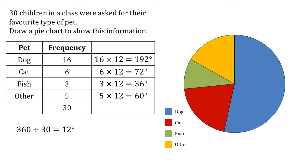Once you're happy that all the angles have been drawn correctly, you can colour in your pie chart and add a key so that people know which slice is which. Looking at the key at the bottom, blue is the dog slice, red is for cats, green for fish and yellow for other. And there we go — there's the pie chart of our data.